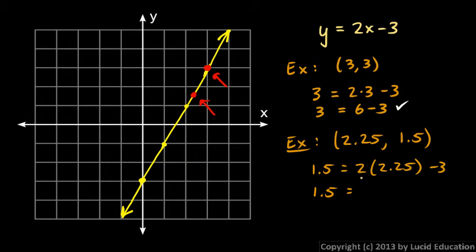That should equal 2 times the x value, which is 2.25 minus 3. So let's see if that's true. 1.5 equals this. 2 times 2.25 is 4.5, and then we subtract 3, and yeah, that works. 4.5 minus 3 is 1.5, so that's true also. So this point is also a solution to this equation.